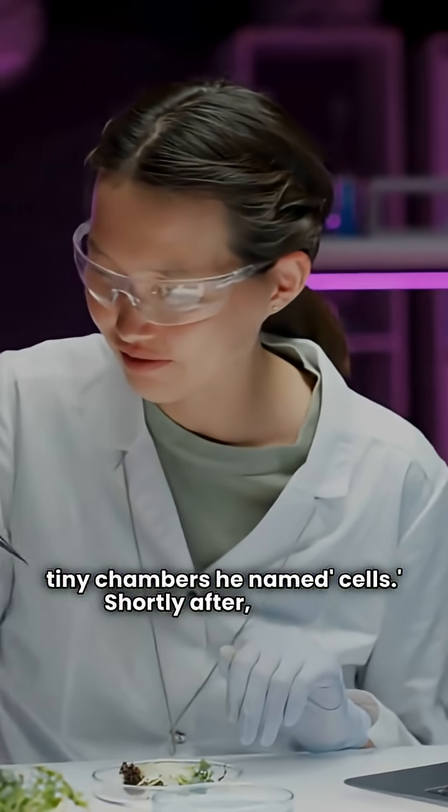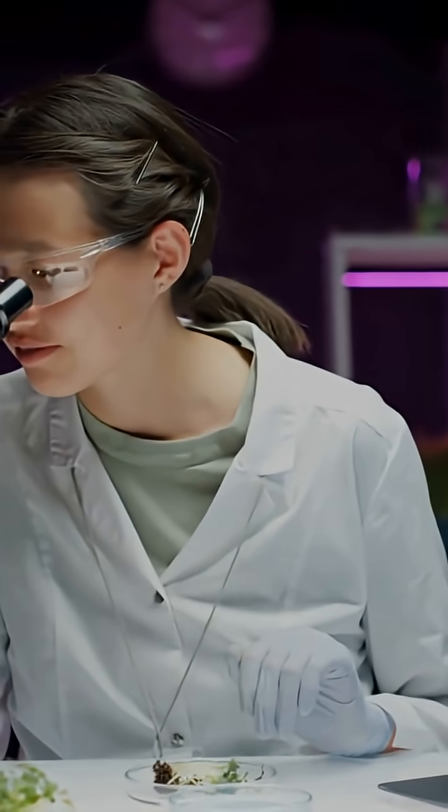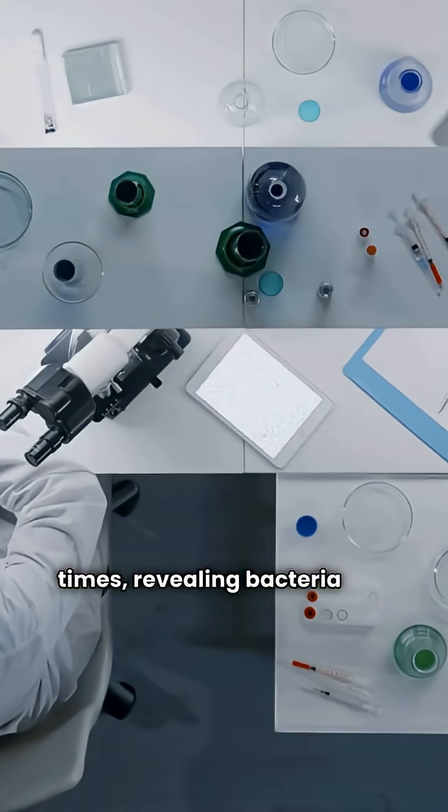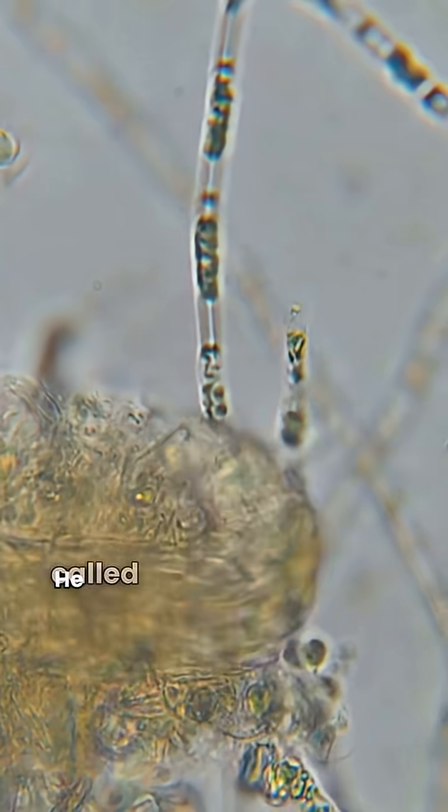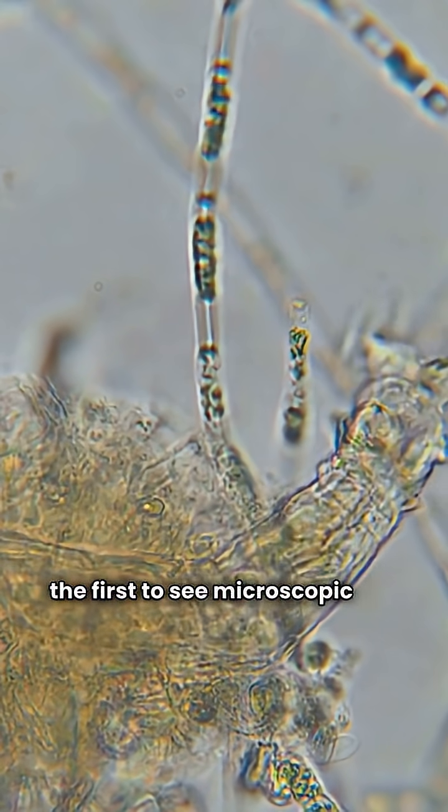Shortly after, Antonie van Leeuwenhoek crafted powerful single-lens microscopes. He could magnify up to 270 times, revealing bacteria and blood cells. He called these tiny creatures animalcules, becoming the first to see microscopic life.